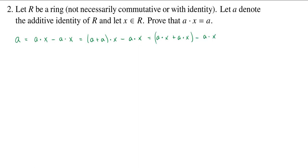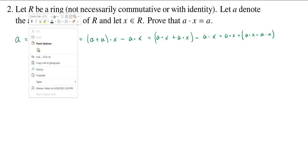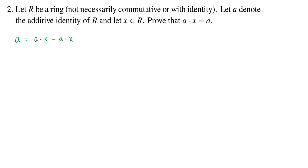I'm in a ring so I can use associativity and I can rewrite this as A times X plus A times X minus A times X. I can now take this first A and break it up as A plus A because A is the additive identity.